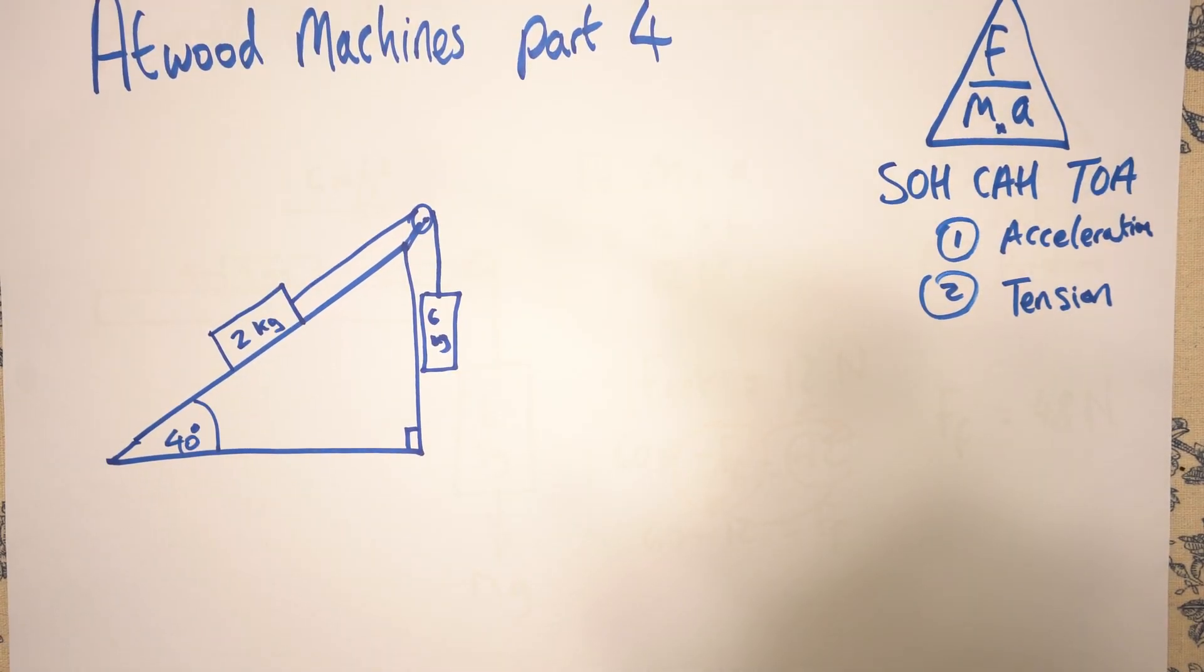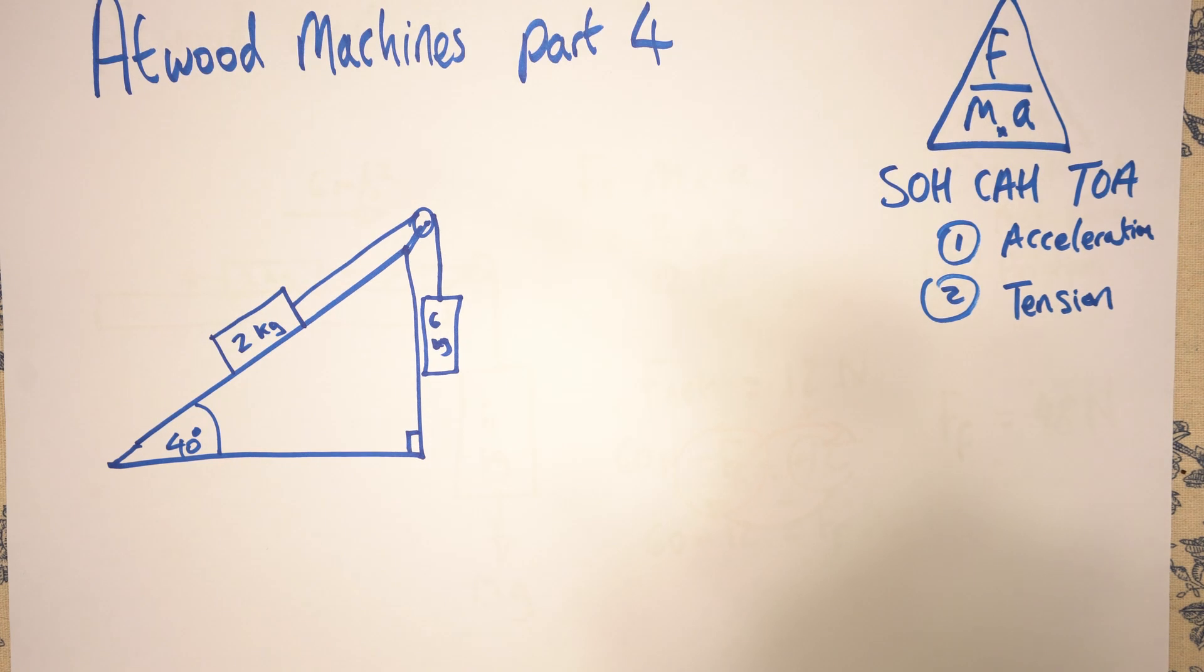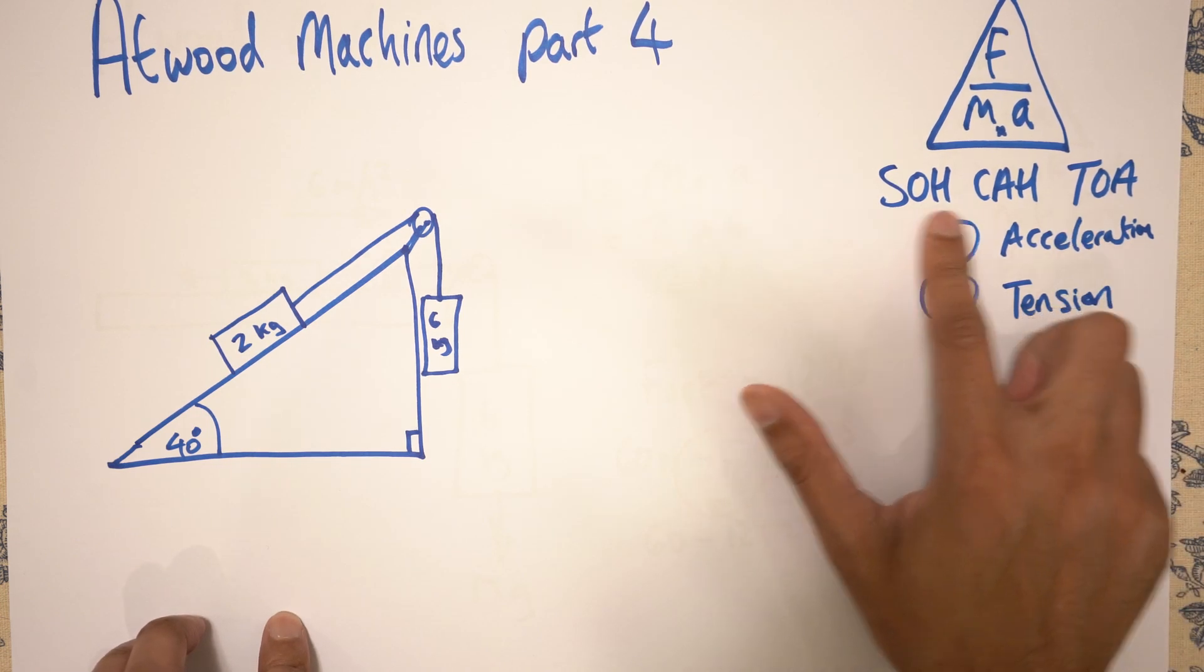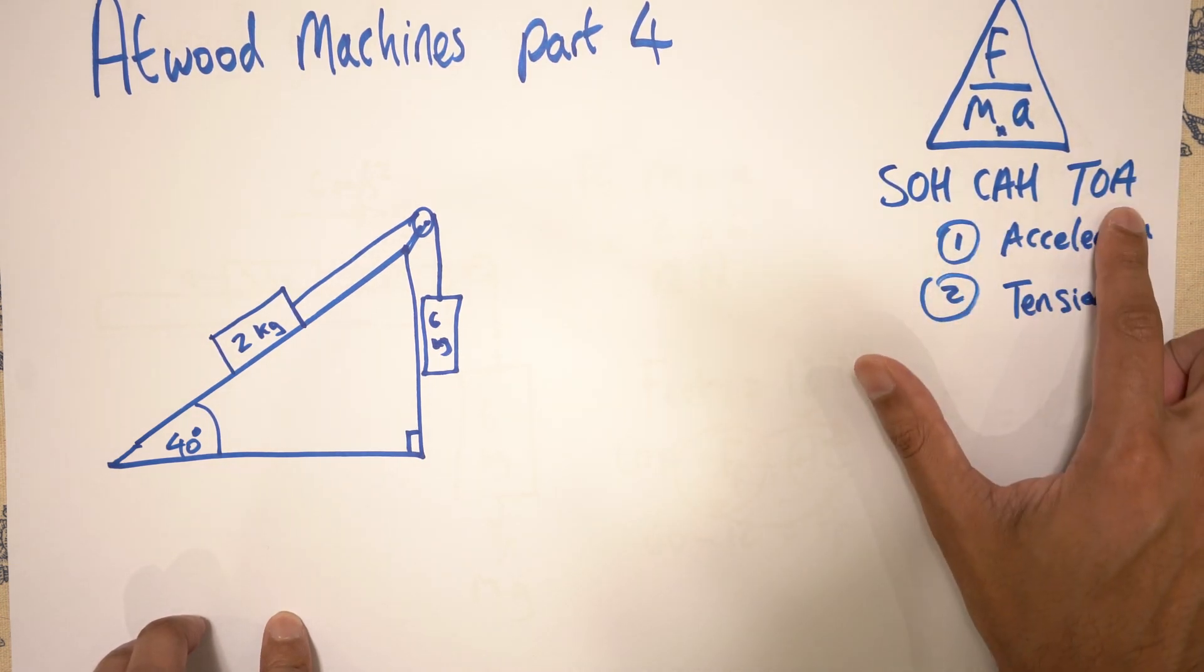Hi, welcome to Science Chomp. Today we're going to be looking at Atwood Machines part four. Now this is a lot more complicated than before, but really all we're doing is we're adding SOHCAHTOA, so the trigonometry stuff.